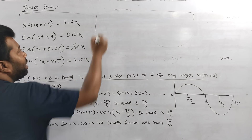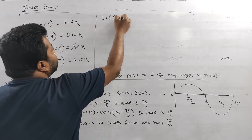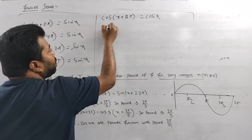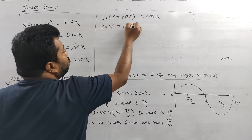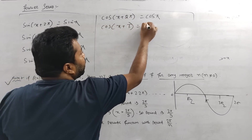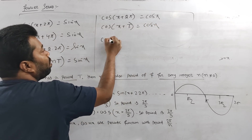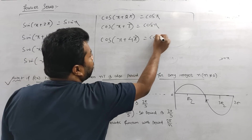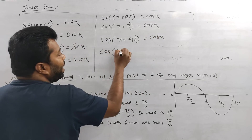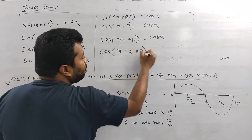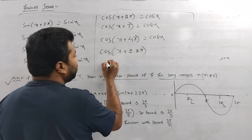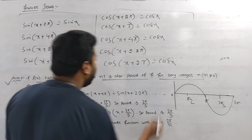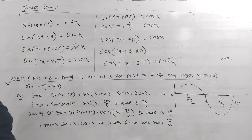The same logic applies to cosine. Cos(x + 2π) = cos x. So cos(x + 2t) = cos x. Therefore cos(x + nT) = cos x, confirming f(x + nT) = f(x) for cosine as well.